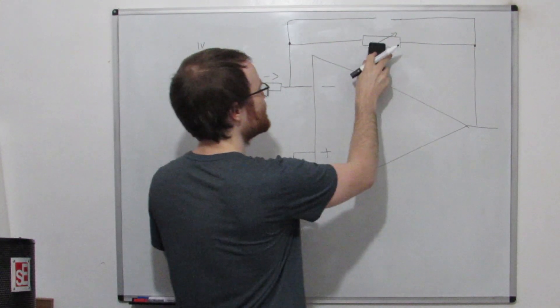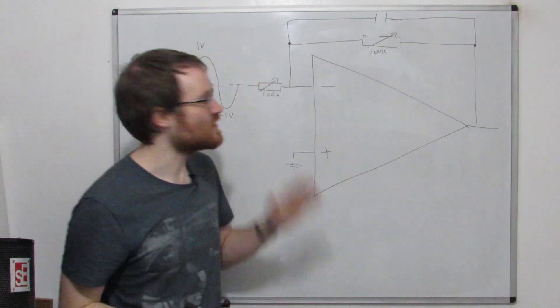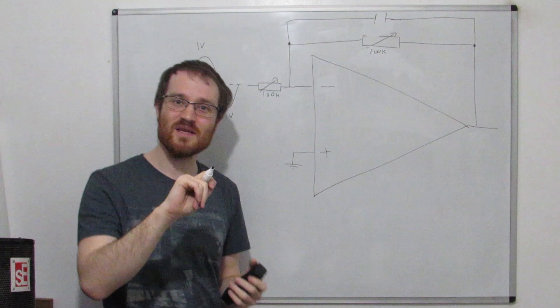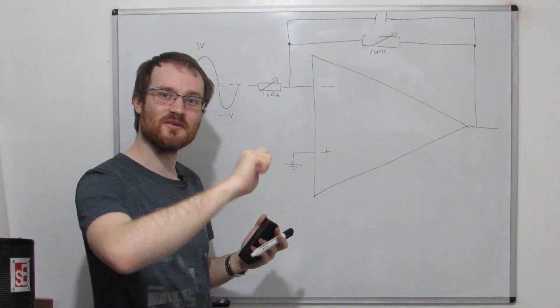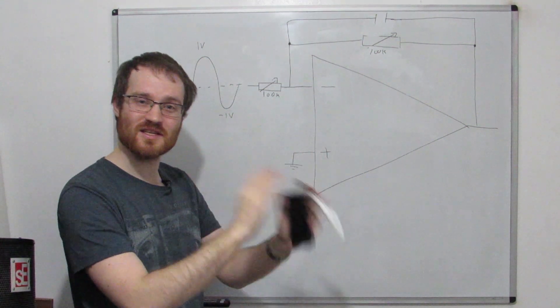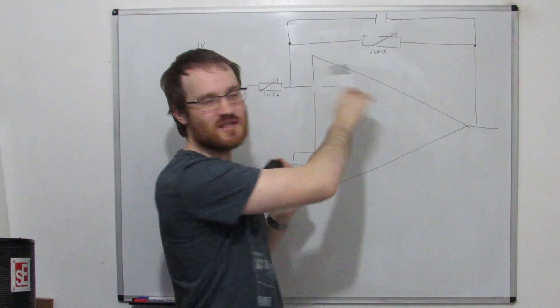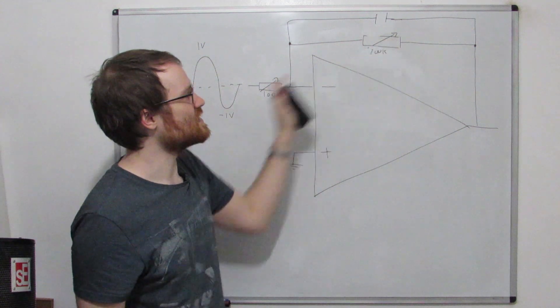So we're simultaneously changing the cutoff frequency and the gain at the same time, and we don't want to do that. So all we're going to do is replace these two resistances with a linked stereo potentiometer, which is basically a potentiometer where you turn one dial and it wipes two separate potentiometers at the same time. So you can always keep these two resistances to be exactly equal, so the gain is always one.